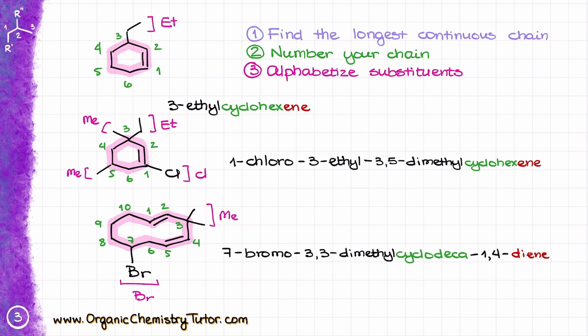The nomenclature of alkenes and cycloalkenes is very similar, with just one more layer of complexity: paying attention to where the double bond is and giving it the lowest possible number before looking at substituents. Since the double bond has no free rotation, we can have different stereoisomers — which we describe as E or Z stereoisomers. Watch the next video to learn how to assign E and Z stereodescriptors to your molecules.